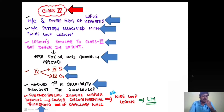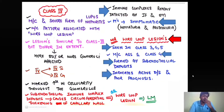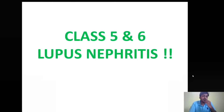The sub-endothelial immune complex deposition causing circumferential thickening of the capillary wall forms what is called the wire loop lesion, which can be seen under light microscopy. The immune complexes are readily detected by immunofluorescence and electron microscopy. Patients with class 4 are symptomatic, presenting with hematuria and proteinuria. Wire loop lesions are seen in classes 3, 4, and 5 but are most commonly associated with class 4. They indicate active disease and a poor prognosis.